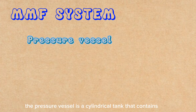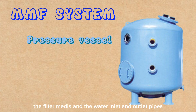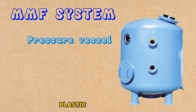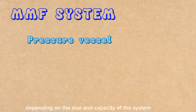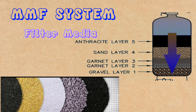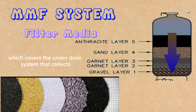The pressure vessel is a cylindrical tank that contains the filter media and the water inlet and outlet pipes. The pressure vessel can be made of steel, fiberglass, or plastic, depending on the size and capacity of the system. The filter media is a layer of different materials that have different sizes and densities, usually composed of three layers: anthracite, sand, and garnet. Anthracite is the lightest and coarsest material, sand is the medium-weight and medium-sized material, and garnet is the heaviest and finest material. The filter media is supported by a layer of gravel at the bottom of the pressure vessel, which covers the under-drain system that collects the filtered water.